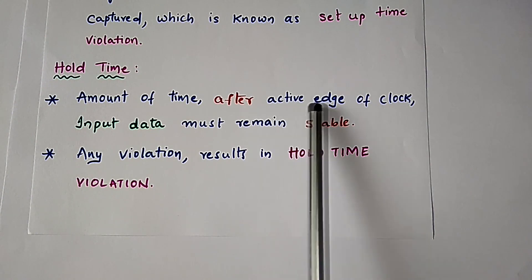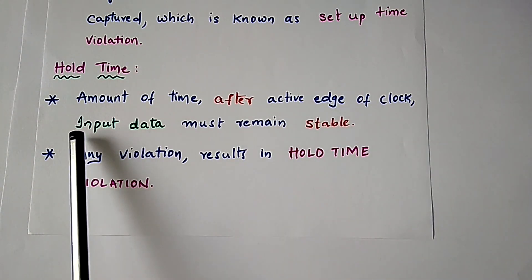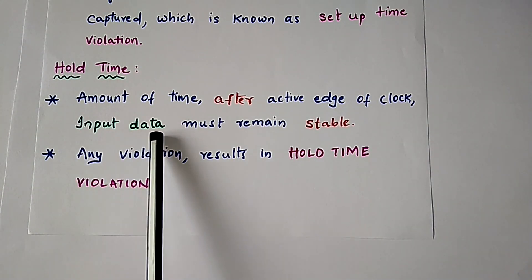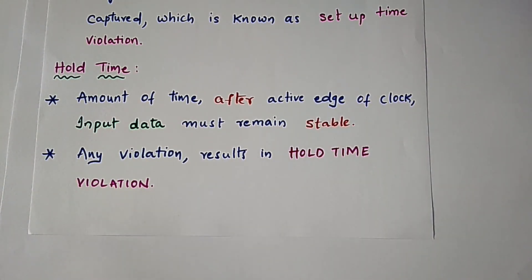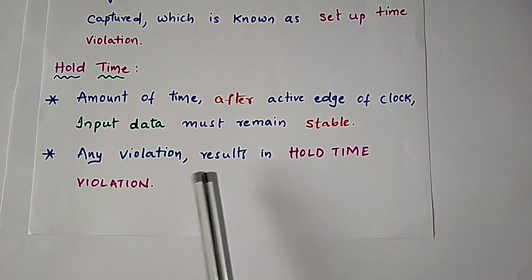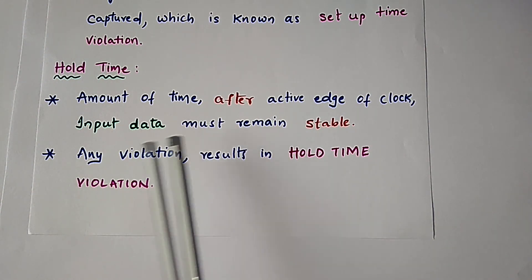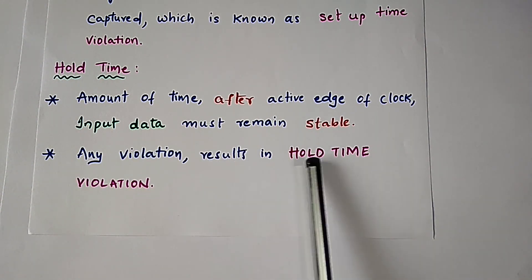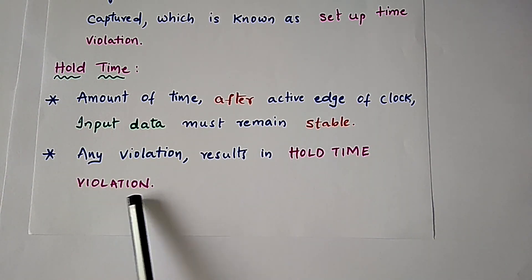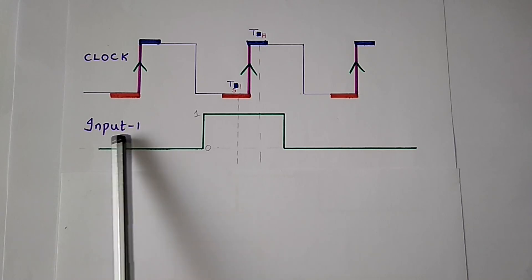Hold time is the amount of time after the active edge of the clock during which the input data must remain stable. If the input is not constant during hold time, the flip-flop captures incorrect data — this is known as a hold time violation.